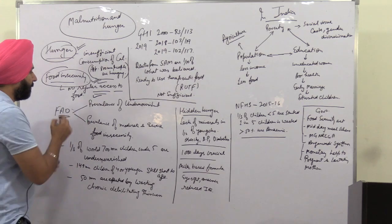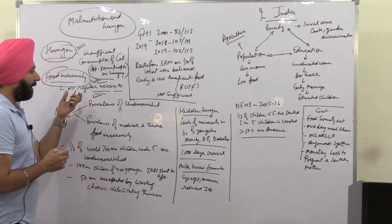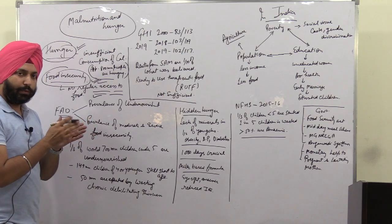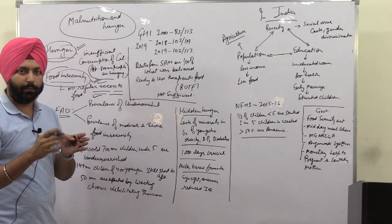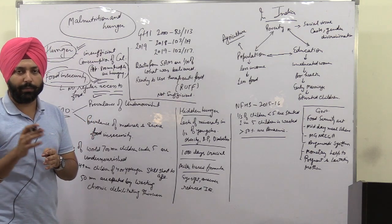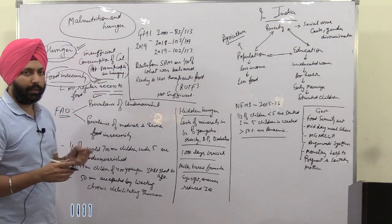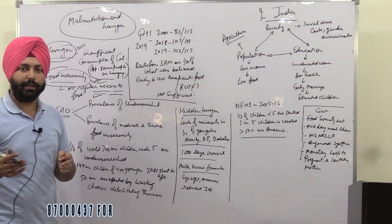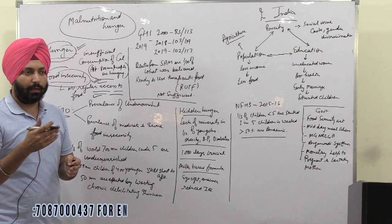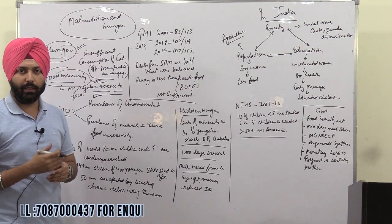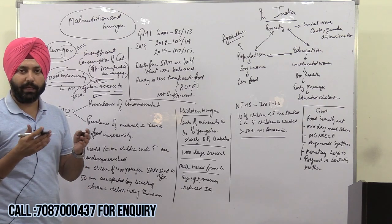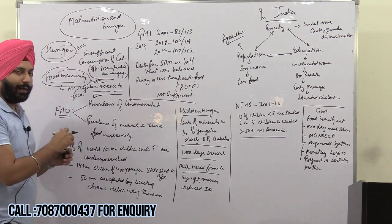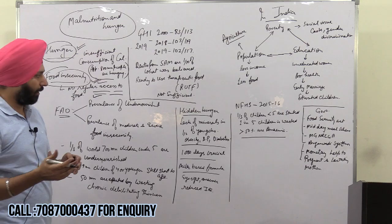Whenever there is food insecurity, you are getting food but to continue getting it, you ignore other basic needs. Due to food insecurity, many other basic needs are being ignored — for example, proper sanitation facilities, proper hygiene, and proper safe drinking water.